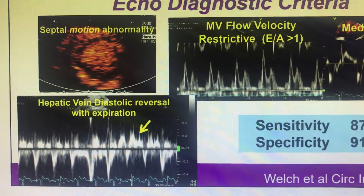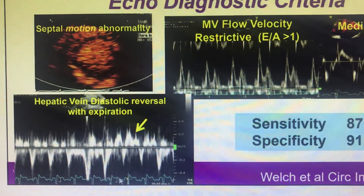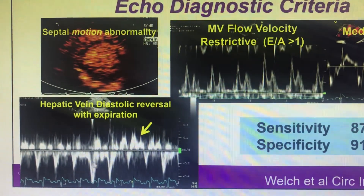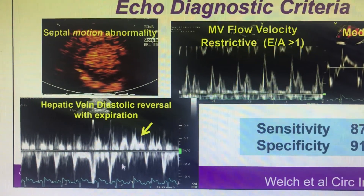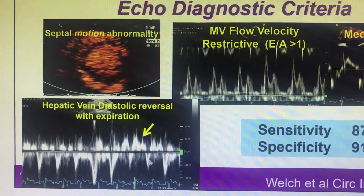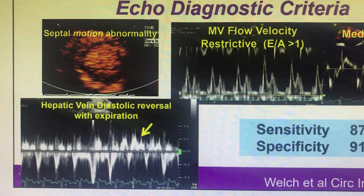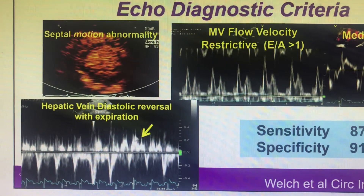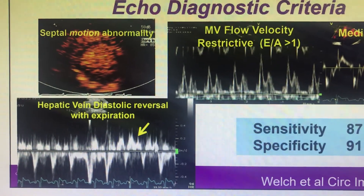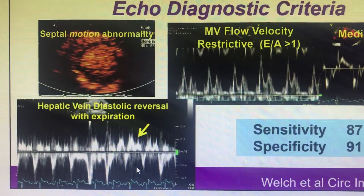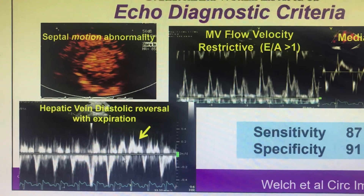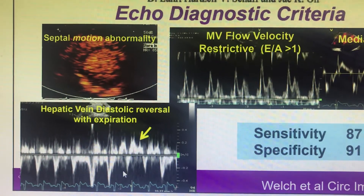The most specific parameter of constrictive pericarditis is the hepatic vein diastolic flow reversal with expiration. In inspiration, there are two waves: one systolic and one diastolic. But as expiration starts, there is only a systolic wave, while a diastolic flow reversal becomes prominent in the expiratory phase of the hepatic vein.